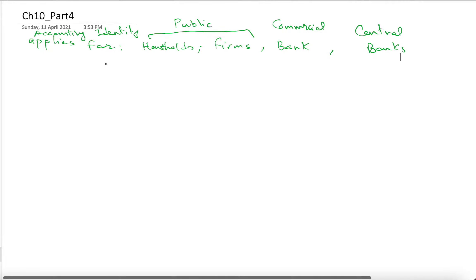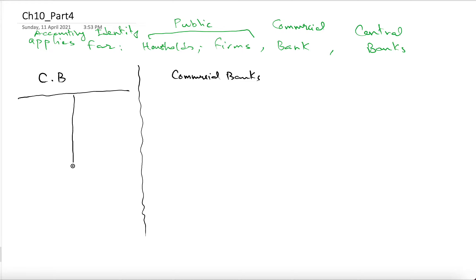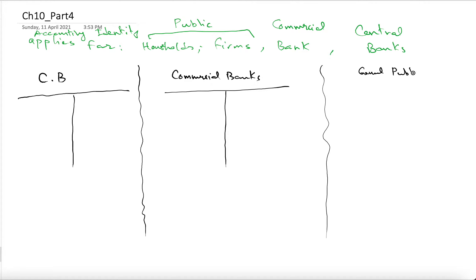Let's assume that we have the central bank here. Then we have commercial banks. For the sake of simplicity, we compile them in one balance sheet. So there's one balance sheet for the central bank, one balance sheet for commercial banks, and there is the general public — both households and firms.